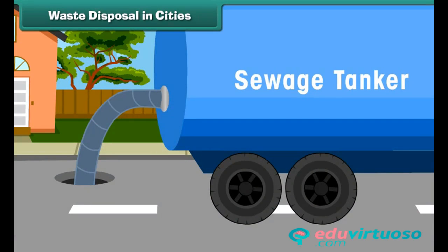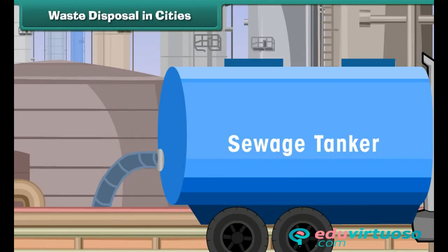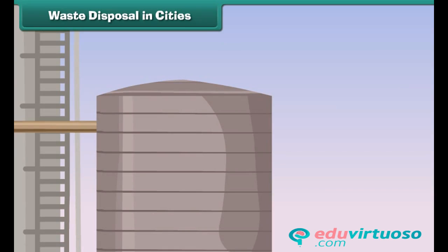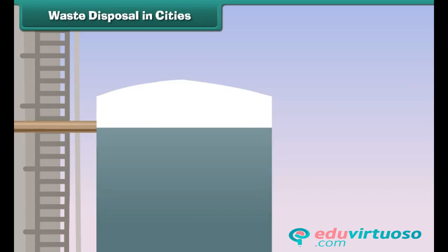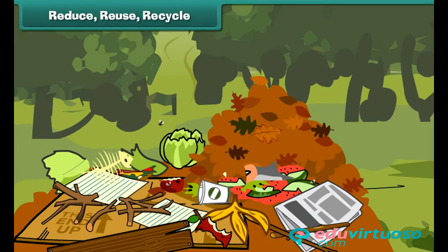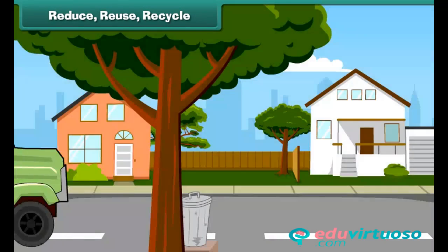Raw sewage collected from all over the city is first passed through a system of filters placed in machines. Filters help separate heavy debris and particles. The debris is then pumped into another tank where the remaining solid material settles down. This settled material is called sludge. The leftover liquid is drawn out, treated with chlorine to make it germ-free, and then released into a river.